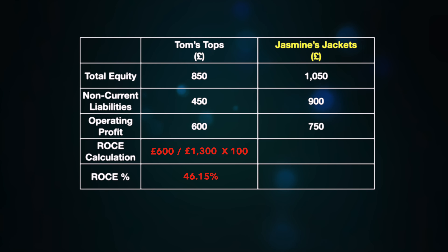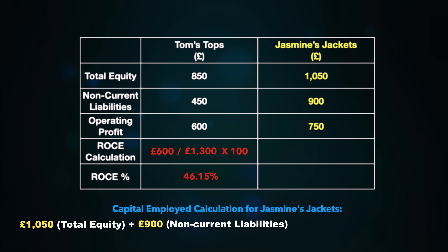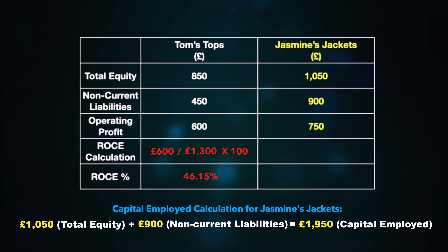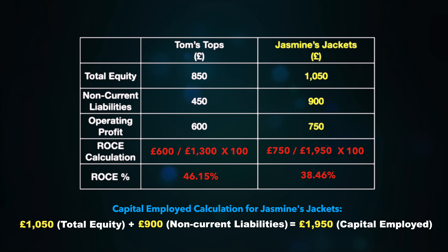We will start with Tom's Tops on the left. It has an operating profit of £600. We simply need to divide this by the capital employed, but this figure isn't given to us directly, so we need to add total equity of £850 and non-current liabilities of £450 together, giving us a capital employed figure of £1,300. So for Tom's Tops, that's £600 divided by £1,300 multiplied by 100, meaning the business has a return on capital employed of 46.15%. For every £1 of capital invested into Tom's Tops, the business is returning a profit of 46p.